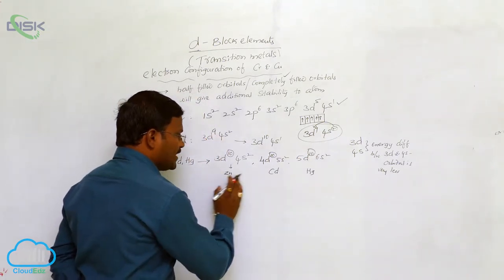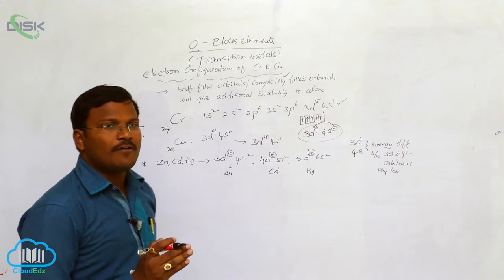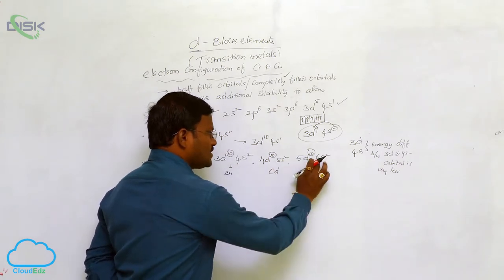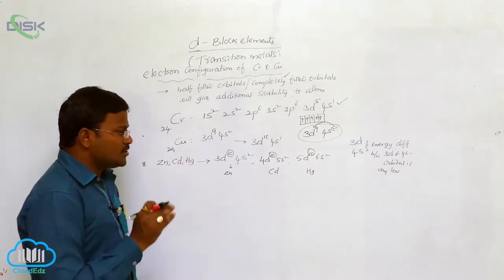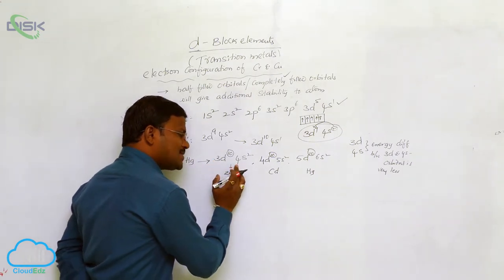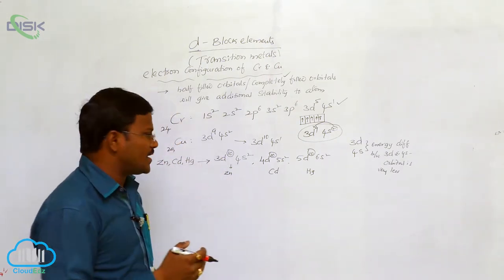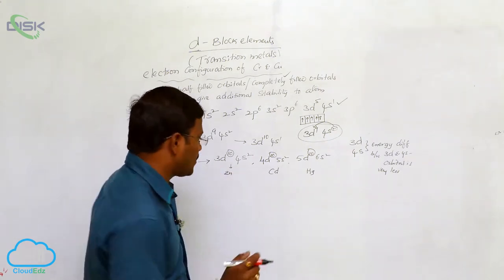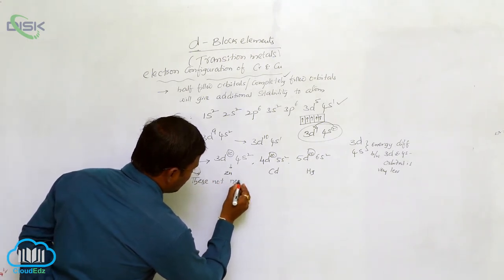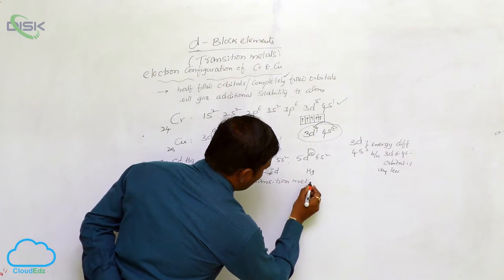The oxidation state generally exhibited by zinc, cadmium, and mercury is +2 only. The loss of electrons to form ions always takes place from the valency shell — shell 4, 5, and 6 for zinc, cadmium, and mercury respectively. So the electrons are lost from the s orbital, not from the d orbital. In both atomic and ionic states, these elements retain completely filled d-orbitals. This is the reason why they are not transition metals or transition elements.